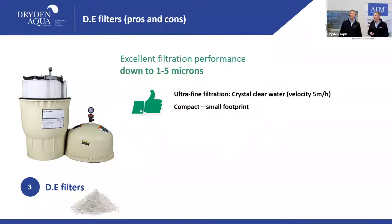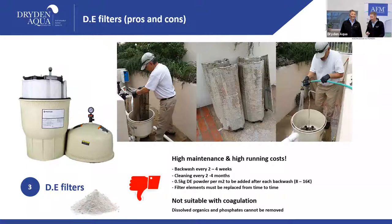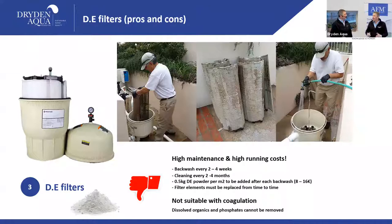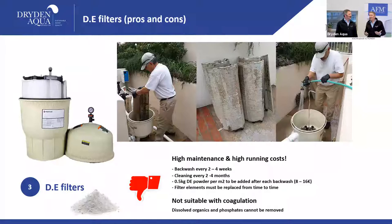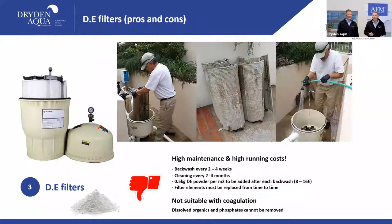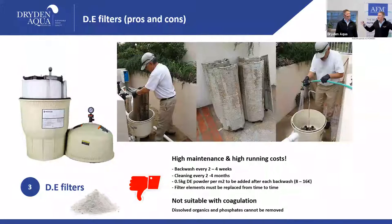A DE filter has elements inside. You add DE powder — a very fine powder — into the skimmer, and it washes onto the elements, creating a filtration layer. After each backwash, which is needed every two to four weeks, you reverse the flow, the DE is pushed off the elements and goes down the drain, so you have to replace the DE every time you backwash.